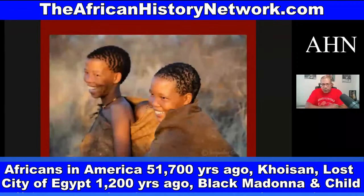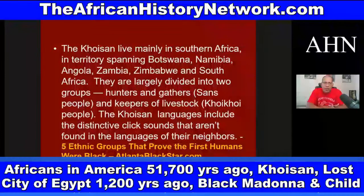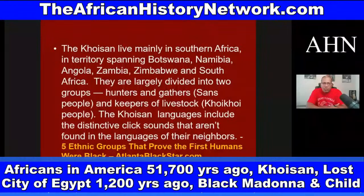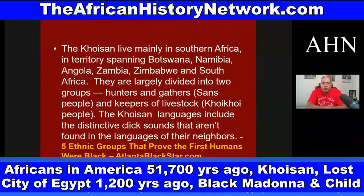Here is a picture of two Khoisan women — these are the short-statured Africans, the Khoisan, who are the ancestors of the Igbo and the Twa. The Khoisan live mainly in southern Africa in territories spanning Botswana, Namibia, Angola, Zambia, Zimbabwe, and South Africa. They are largely divided into two groups: hunters and gatherers known as the San people, and keepers of livestock known as the Khoikhoi people. The Khoisan languages include distinctive click sounds not found in the languages of their neighbors.